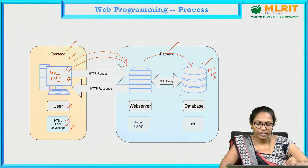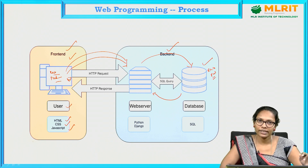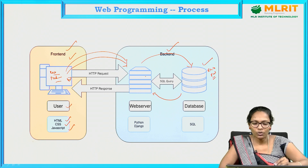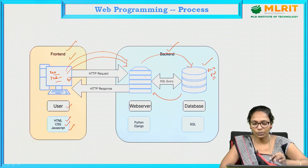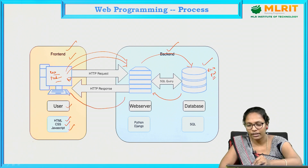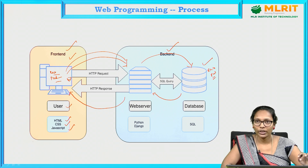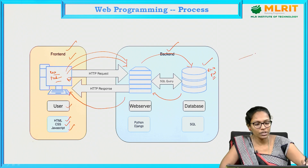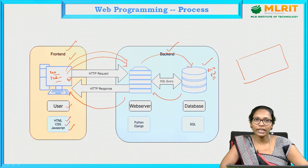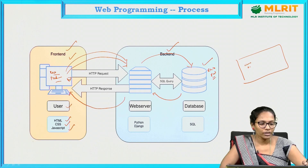The database responds confirming the record exists. The server verifies the credentials are correct and generates a response, allowing the student to open their page. After logging in, it displays the student's details — name, roll number, section — followed by a button to check attendance.